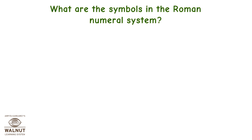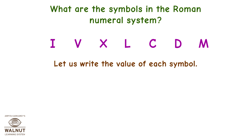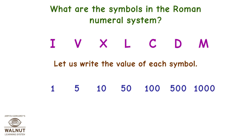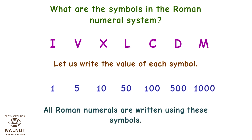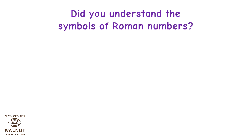What are the symbols in the Roman numeral system? They are: I, V, X, L, C, D, and M. All Roman numerals are written using these symbols.